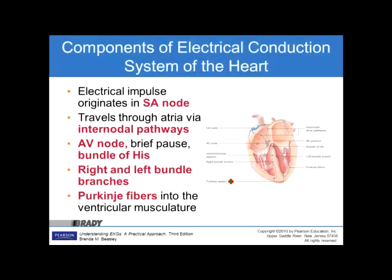Components of the electrical conduction system of the heart: Electrical impulses originate in the sinoatrial node. They then go through the internodal pathways, arrive at the AV node, go through the bundle of His, down into the right and left bundle branches, to the Purkinje fibers, and then to the myocardial muscle. So again: SA node, interatrial pathways, AV node, bundle of His, right, left bundle branches, Purkinje fibers.